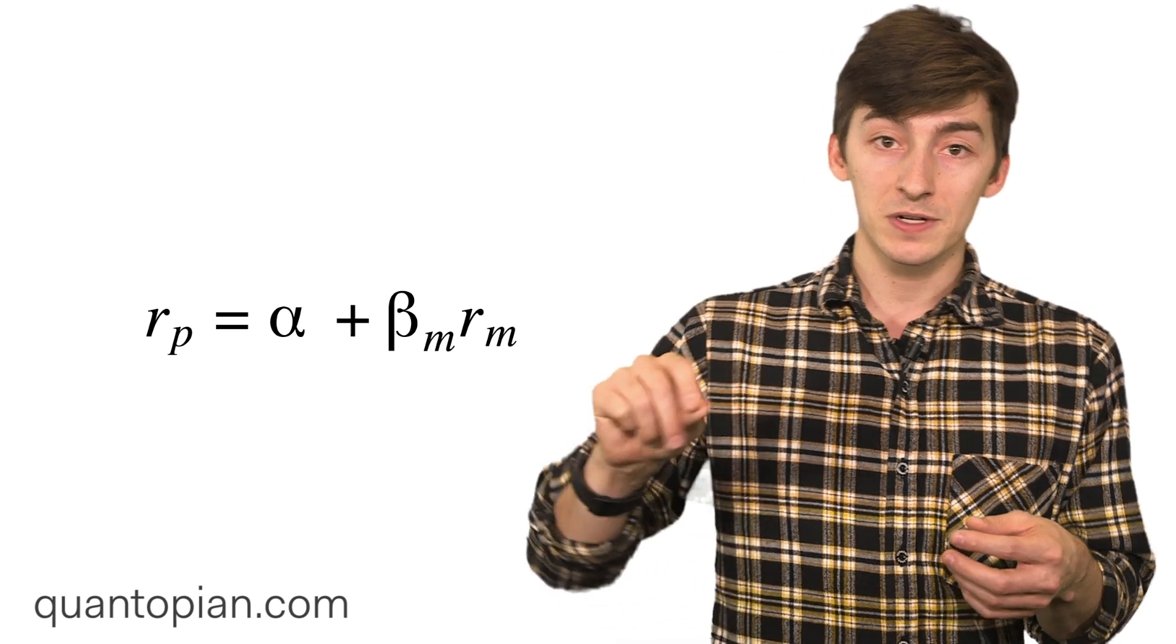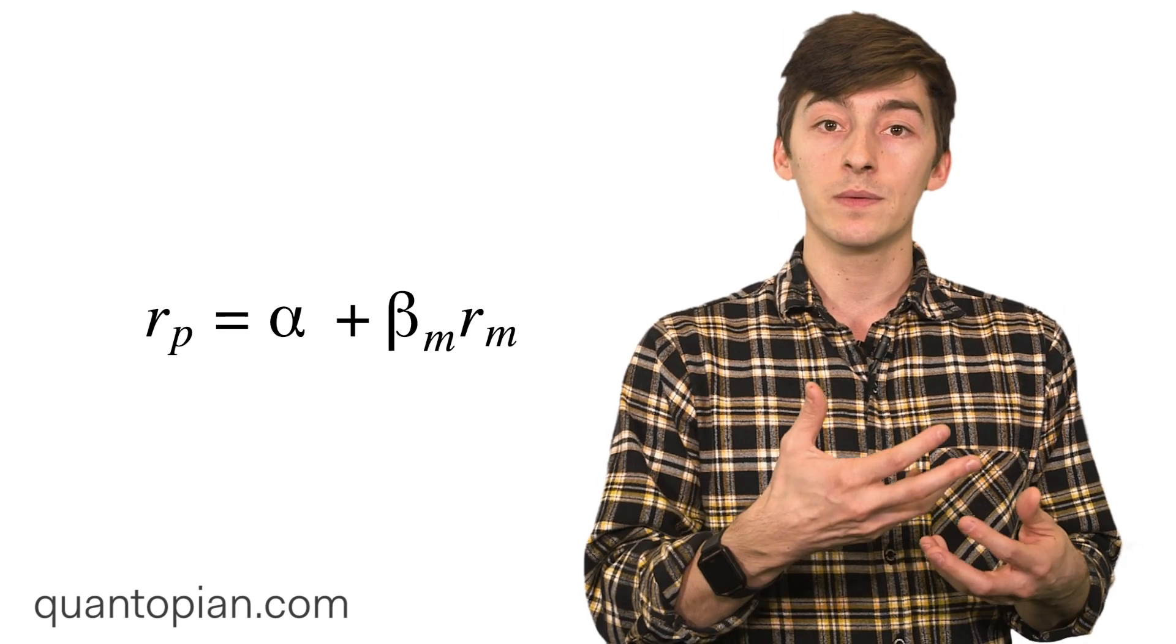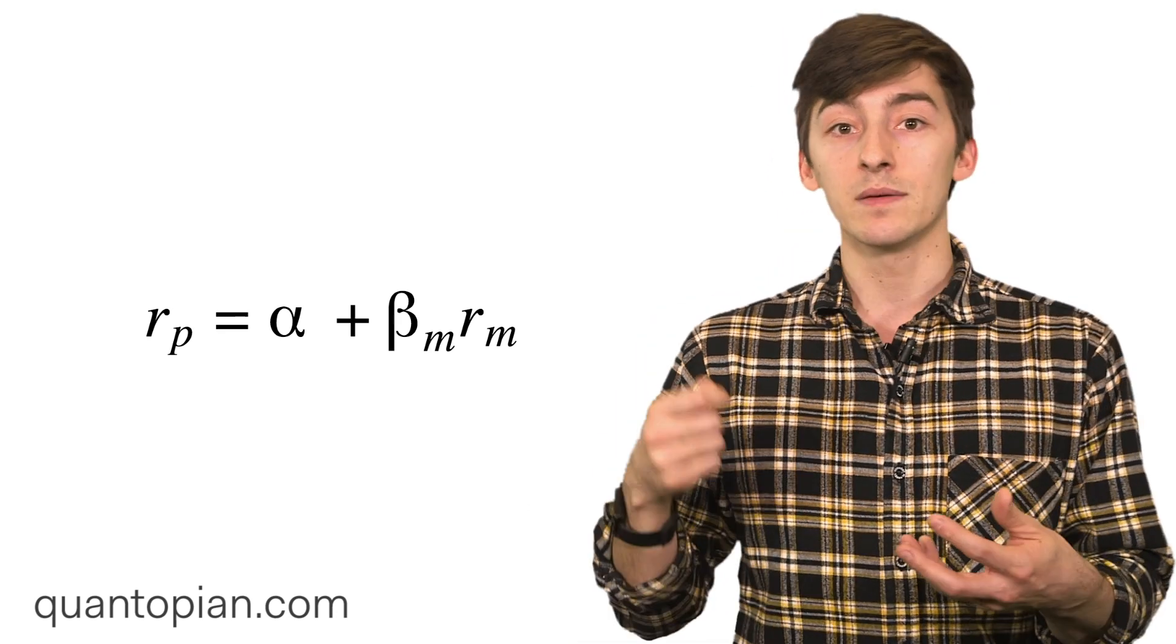In this case, the beta coefficient associated with the returns of the market gives you your market beta. It gives you the number of units that your outcome variable moves by when the market moves.